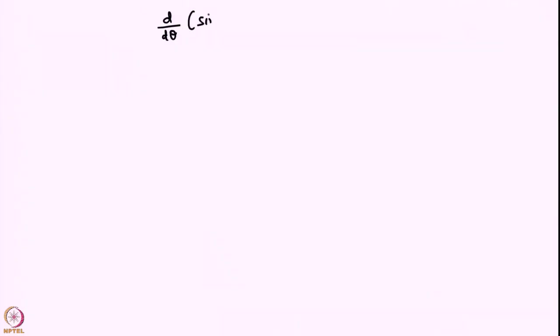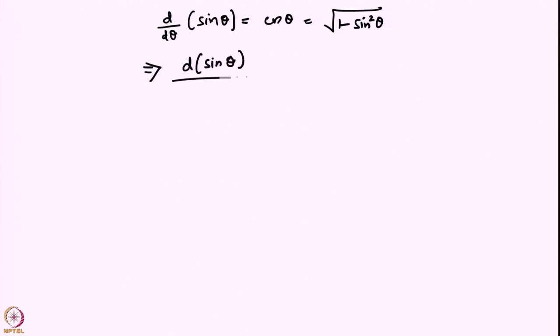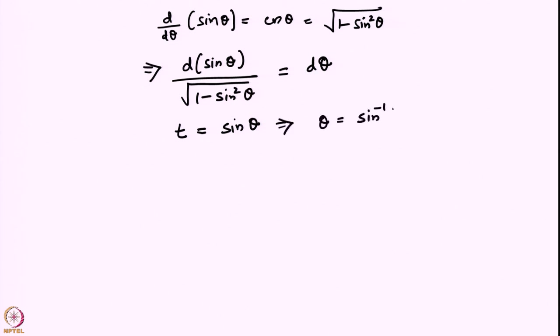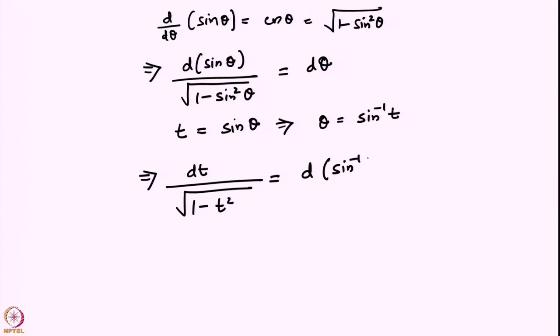Let us go back to circular functions to understand the basic idea. We know that d/dθ of sin θ = cos θ, which can be written as √(1 − sin² θ). Using this, I can actually obtain an integral representation for sin⁻¹. So d(sin θ) · √(1 − sin² θ) = d(sin⁻¹ t). Substituting, this becomes dt/√(1 − t²) = d(sin⁻¹ t).